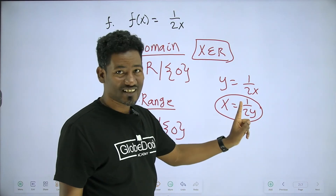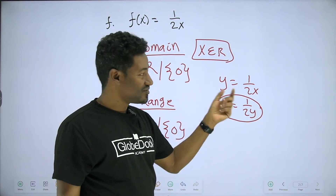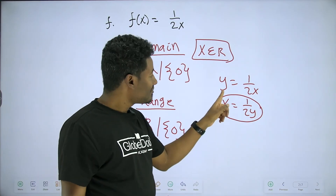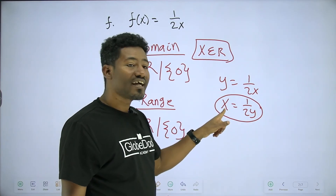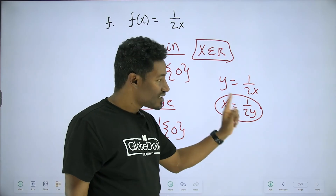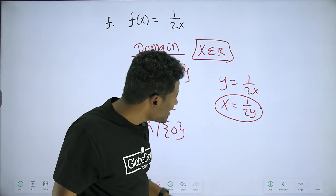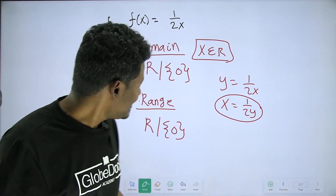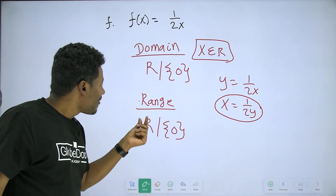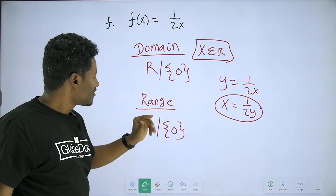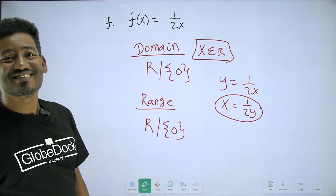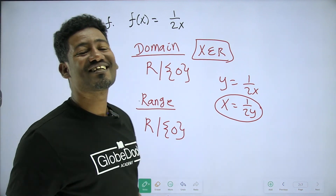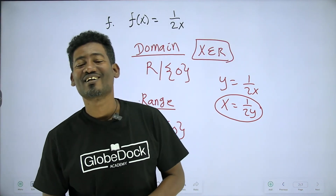y is equal to 1 over 2x. You can solve for x to get x equal to 1 over 2y. If y is equal to zero, the domain would be zero — undefined. So range is all real numbers except 0.